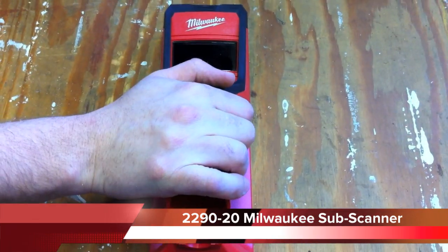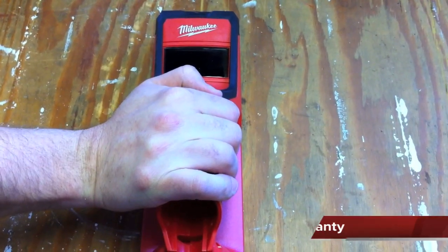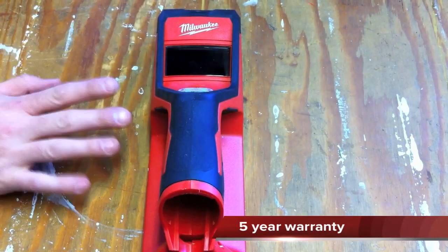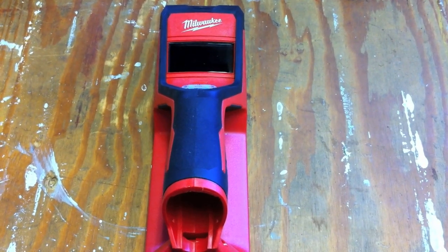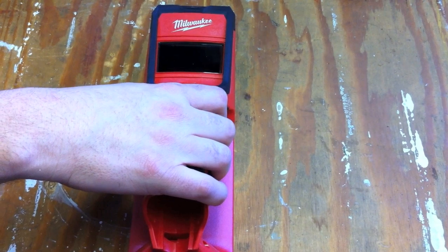This is a cordless scanner. It's part of their ever-expanding M12 lineup. One thing we really have noticed with Milwaukee lately is they're gearing towards professionals. They always have, but really with these high-end tech tools, they're starting to add features that nobody else has.